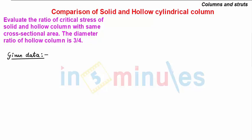In the problem, the given data is: first we have a solid column and a hollow column. The cross-sectional area of solid column is denoted as As and cross-sectional area of hollow column is denoted as Ah.